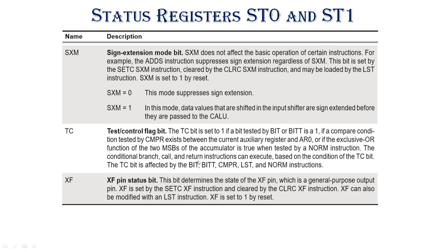Conditional branch, call, and return instructions can execute based on the condition of the TC bit. TC is affected by the BIT, BITT, CMPR, LST, and NORM instructions.